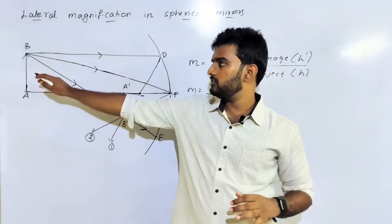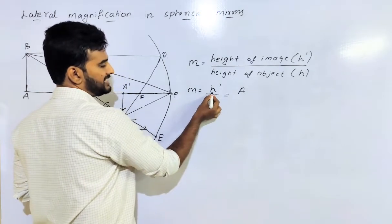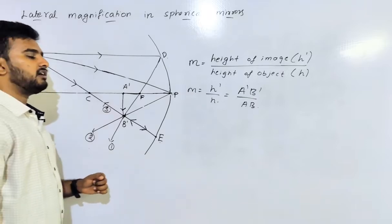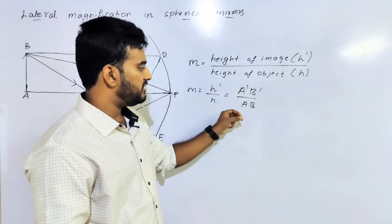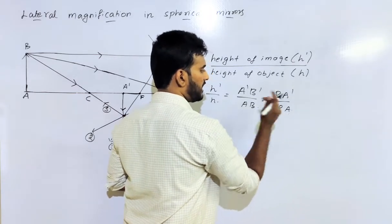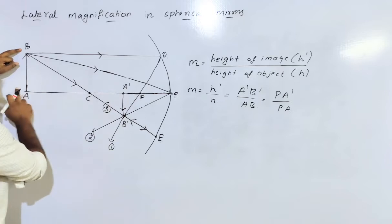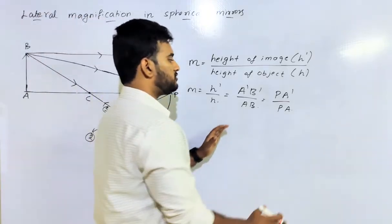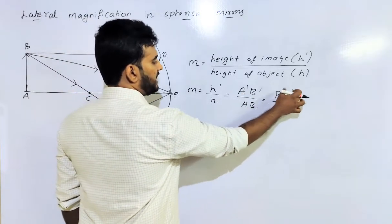Height of Image, that is A'B', divided by AB — we will find one value. What value? PA' divided by PA. Using similar triangles, we will choose two triangles: first triangle BPA, second triangle B'A'P. We will find them similar and derive one equation: A'B' divided by AB equals to PA' divided by PA.